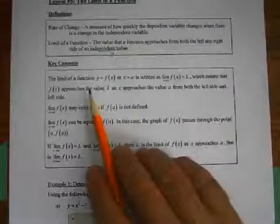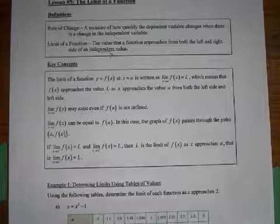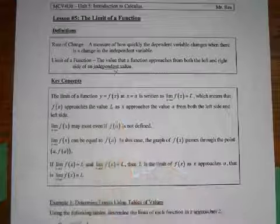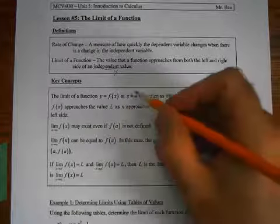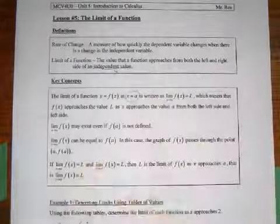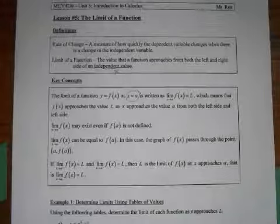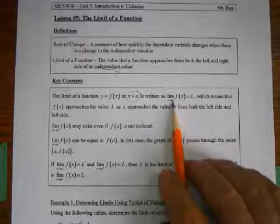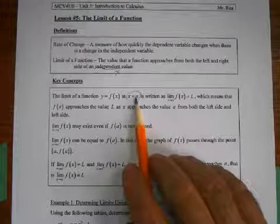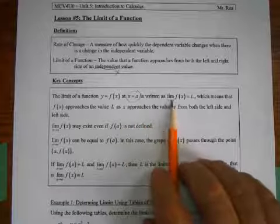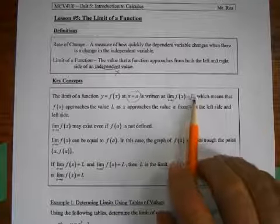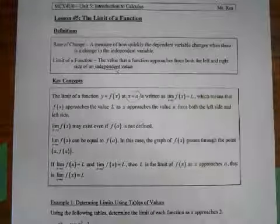Here's the formal definition, and the way we write it is very important — you can't come up with your own way of writing this. The limit of a function y equals f of x at x equals a: we write this as the limit as x approaches a of f of x, and that equals L. Capital L just represents that y value — what is the function approaching?